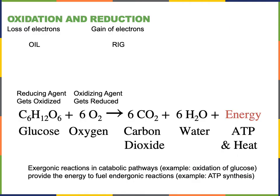Many chemical reactions will involve the transfer of electrons from one atom to another. Oxidation is the loss of electrons in a chemical reaction, and reduction is the gain of electrons in a chemical reaction.